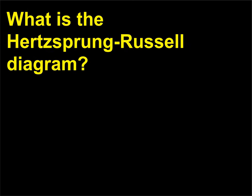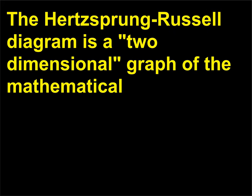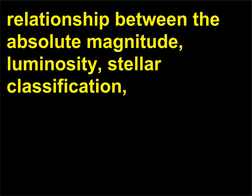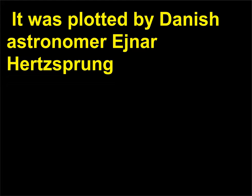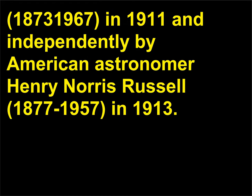What is the Hertzsprung-Russell diagram? The Hertzsprung-Russell diagram is a two-dimensional graph of the mathematical relationship between the absolute magnitude (luminosity), stellar classification, and surface temperature of stars, resulting in a diagram of the stellar life cycle. It was plotted by Danish astronomer Ejnar Hertzsprung (1873-1967) in 1911 and independently by American astronomer Henry Norris Russell (1877-1957) in 1913.